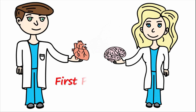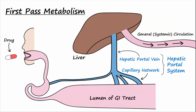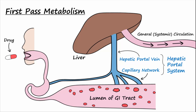Today let's talk about the first pass effect and bioavailability. For a drug taken orally or by mouth to reach systemic circulation, it first passes from the lumen of the digestive tract into the hepatic portal system. This system consists of capillary networks that surround organs of the digestive tract such as the stomach and small intestines, as well as the hepatic portal vein, which carries absorbed material to the liver.